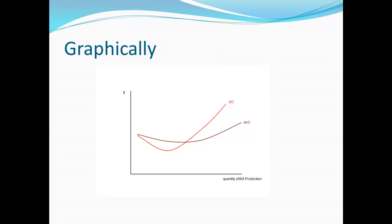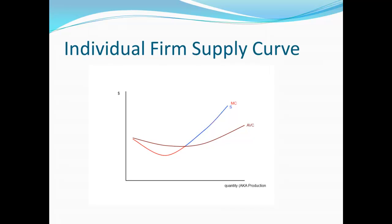Remember, the rules are: whenever the price is below that minimum average variable cost, we want to produce nothing at all. If the price is above that minimum average variable cost, then we want to produce where marginal revenue crosses the marginal cost curve. In effect, the marginal cost curve acts as our supply curve. Here I've made blue that portion of the marginal cost curve, which is the supply curve for the individual price-taking firm.